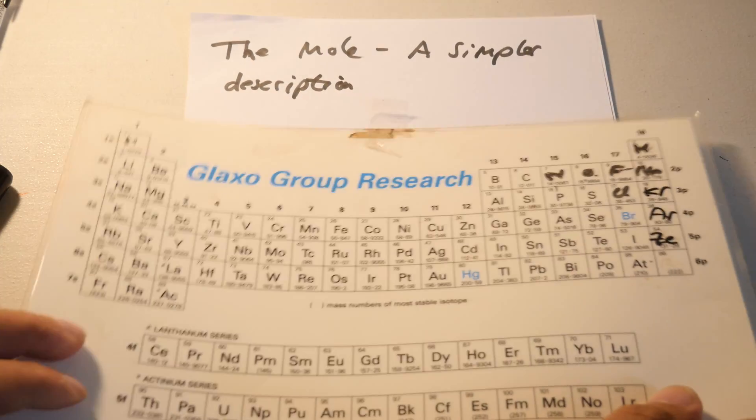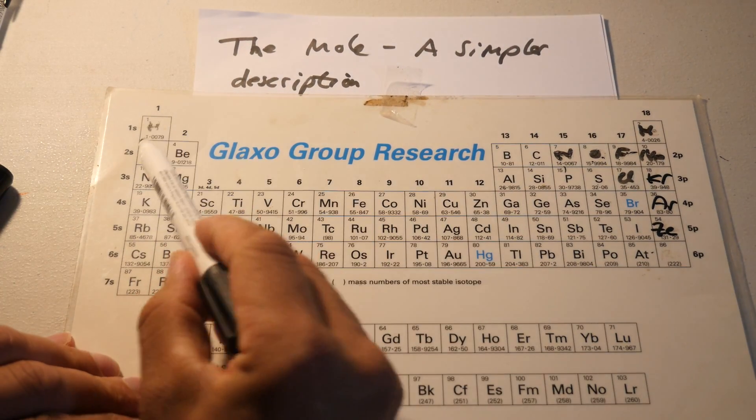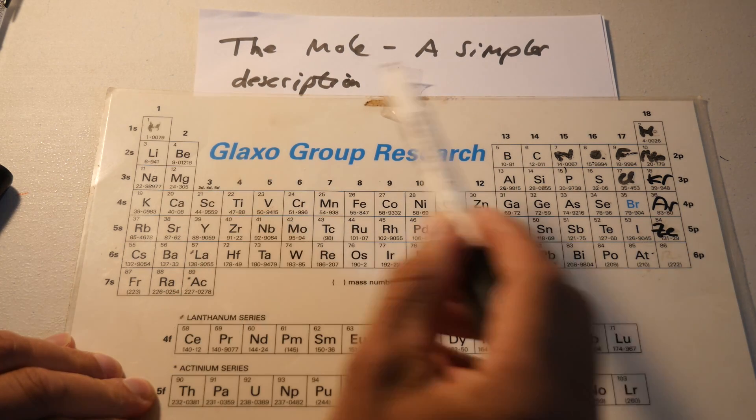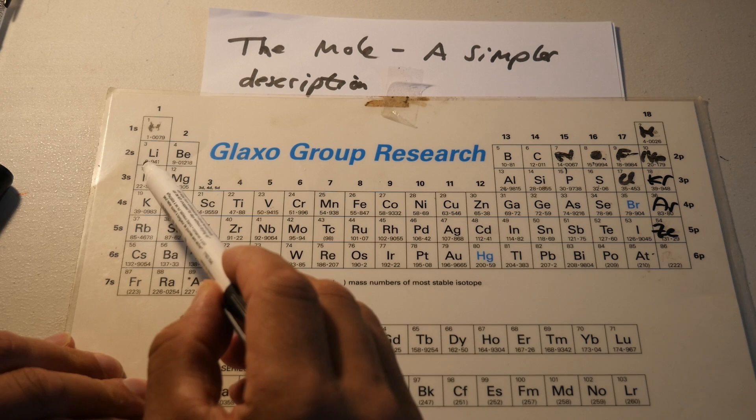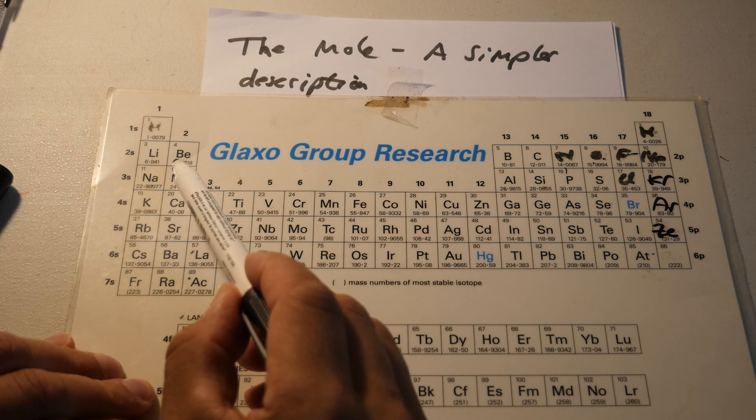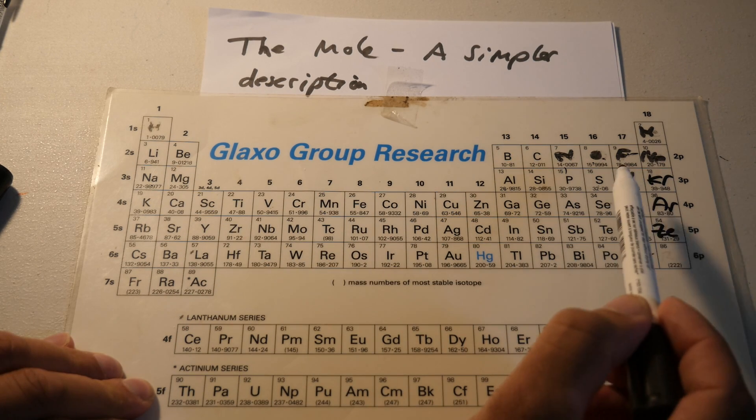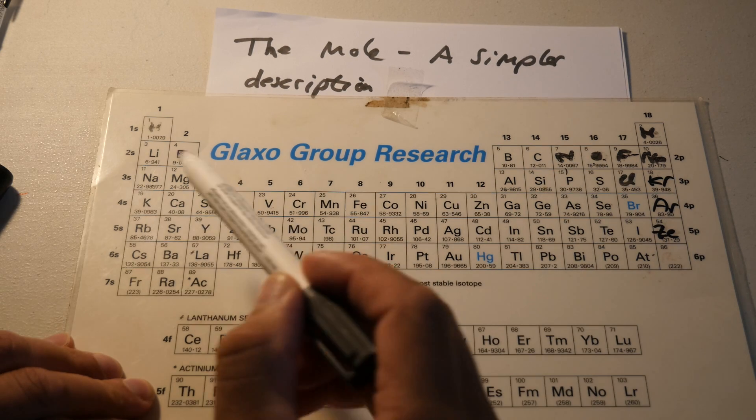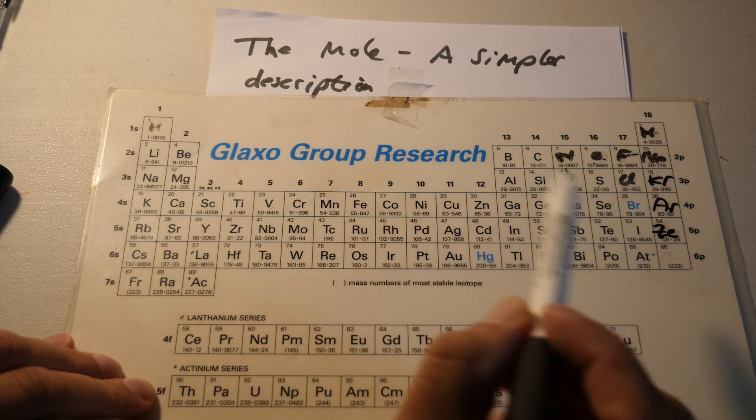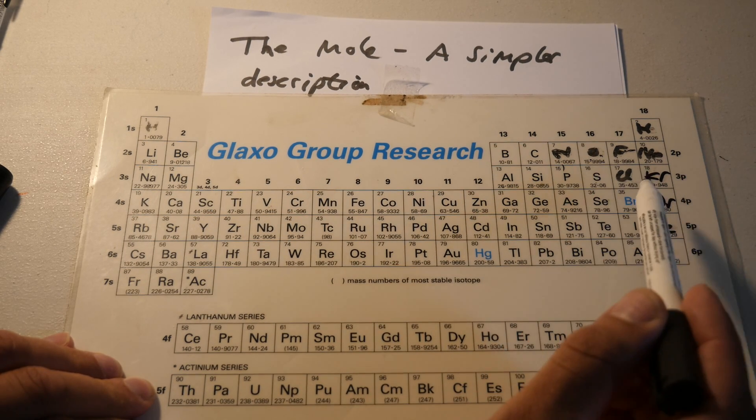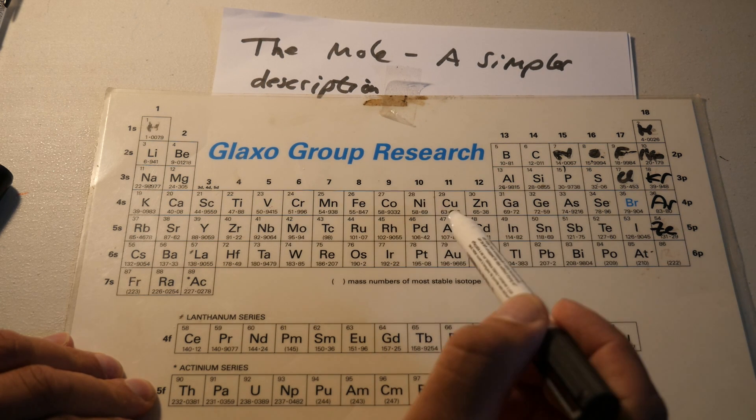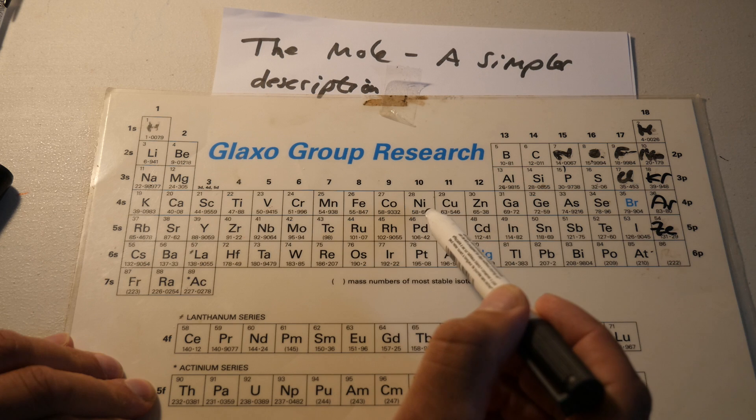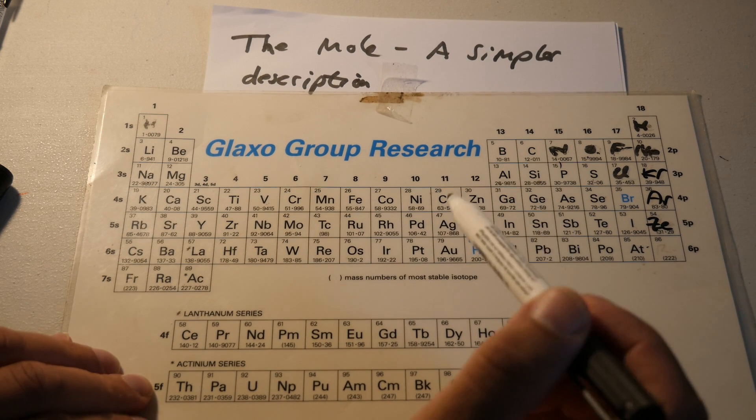Given the periodic table, each element has a mass. Hydrogen is 1, Helium is 4, Lithium is 7, Beryllium 9, Carbon 12, Nitrogen 14, Sodium 23, Magnesium 24, Phosphorus 31, Sulfur 32, Iron 55.8, Nickel 58.7, and so on.